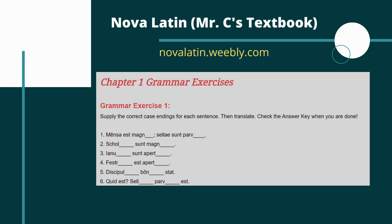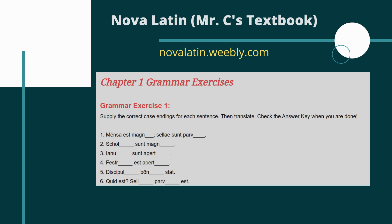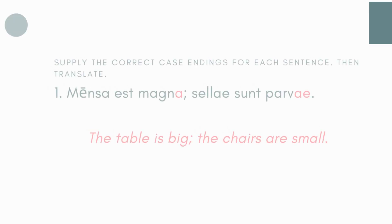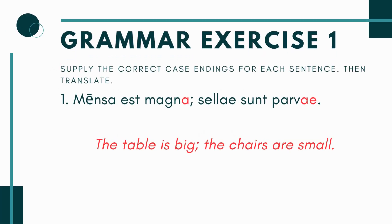For now, let's focus on Grammar Exercise 1 from the Road to Latin textbook. In this chapter we're talking about singular and plural nouns — the difference between -a and -ae — a bit about declensions, and the verb endings -t versus -nt. All those things are coming into play in these problems, and the instructions tell you to supply the correct case ending and then translate.